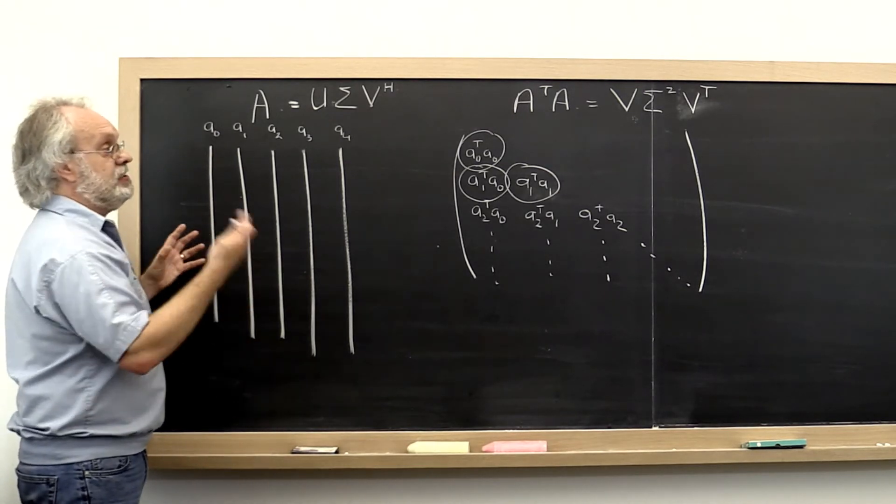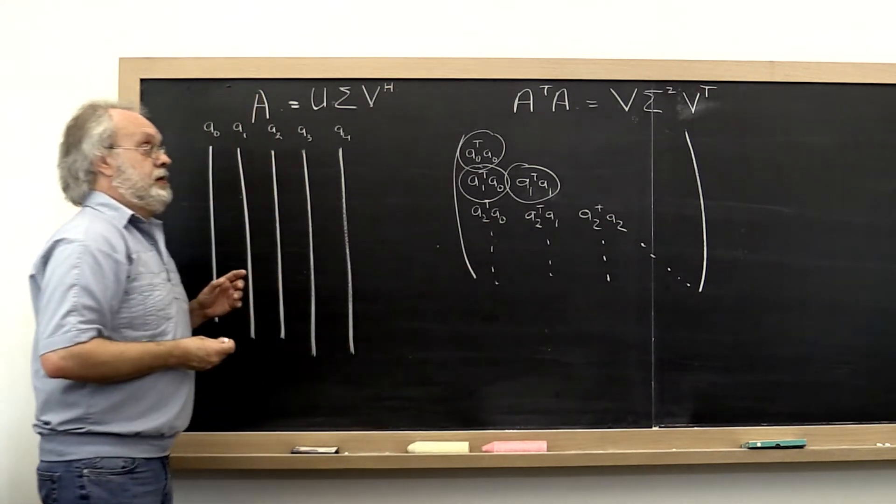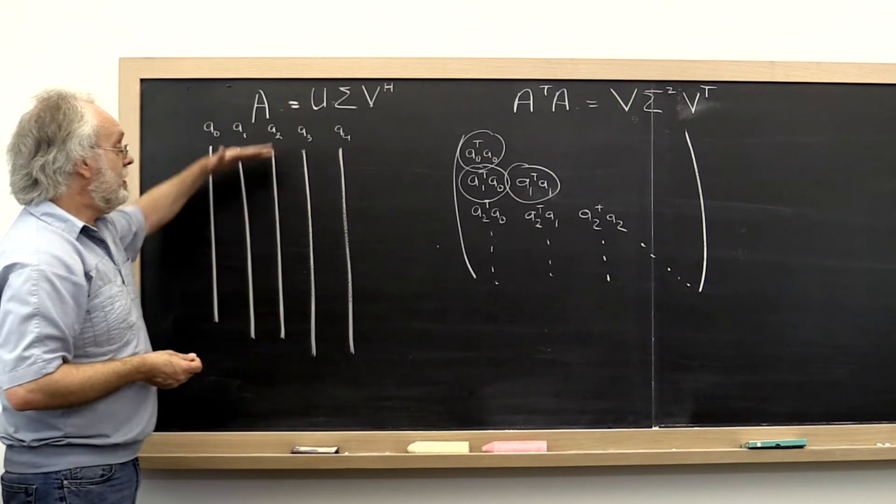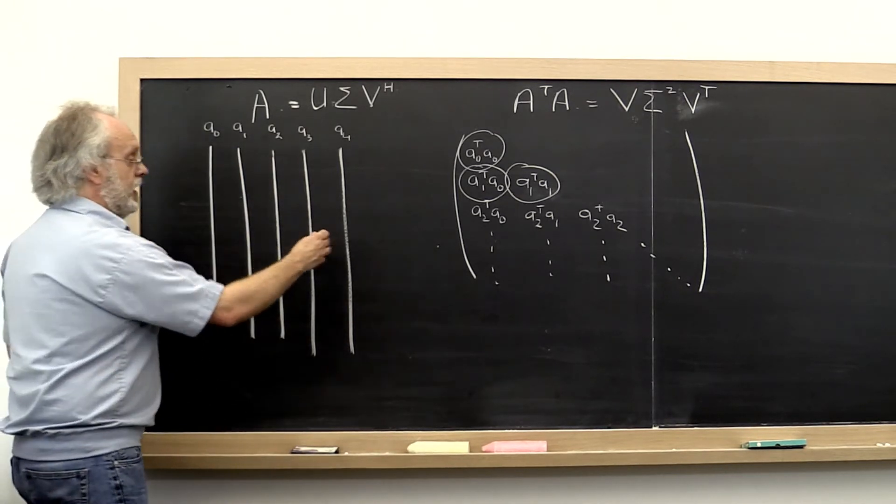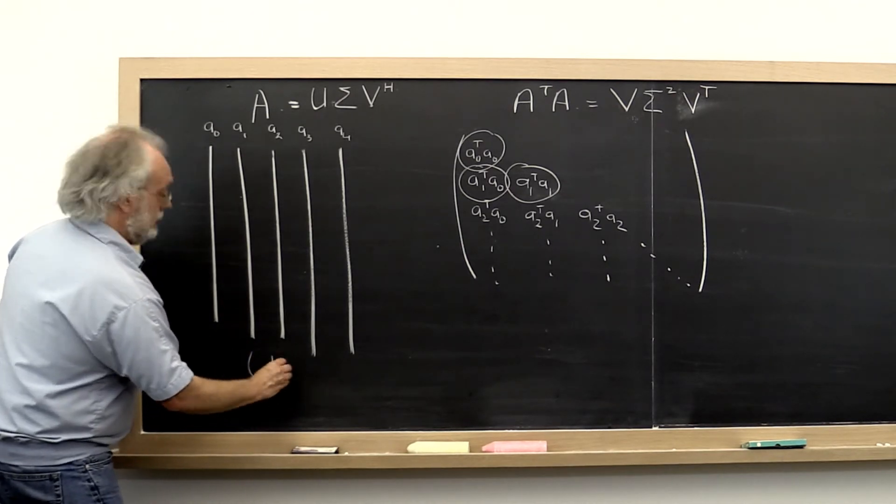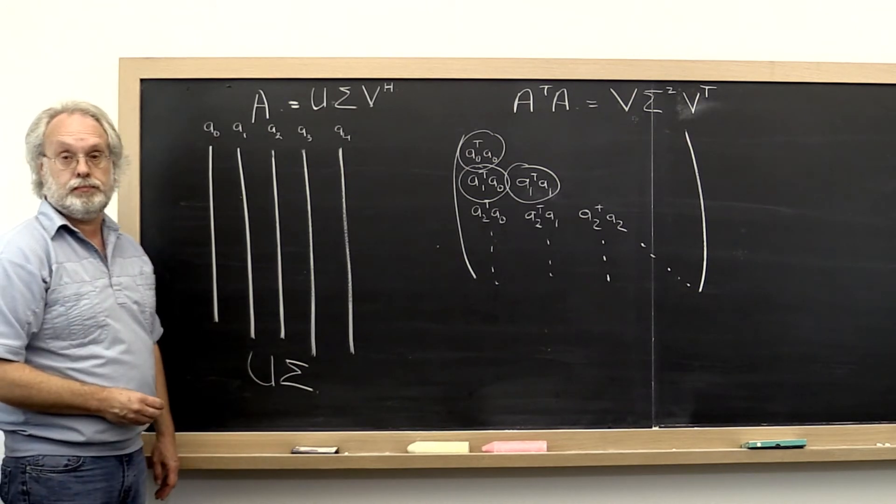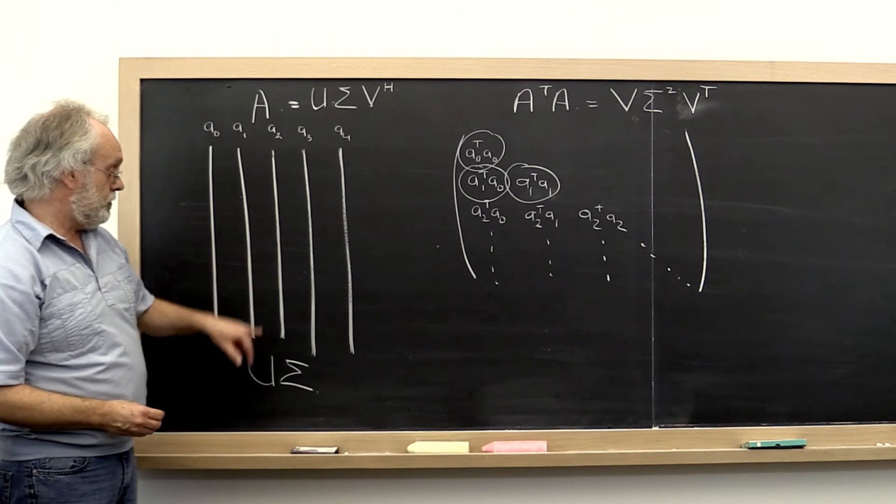And if you keep doing that, then you're doing multiple sweeps over matrix A transpose A. And the net effect on this side is that it transforms matrix A into the matrix U times sigma.